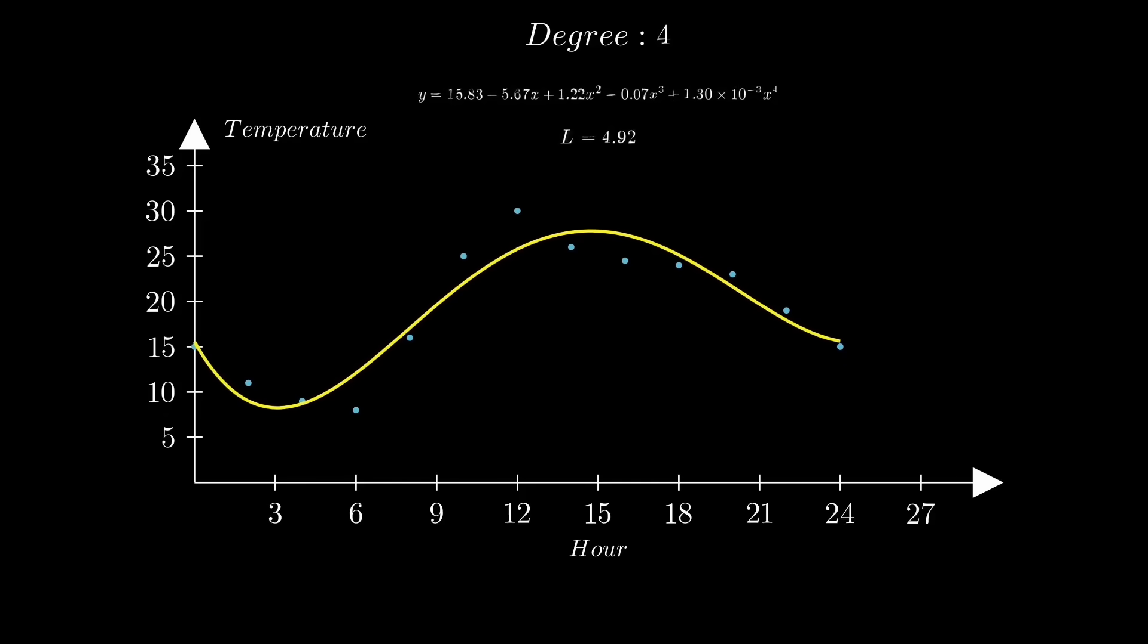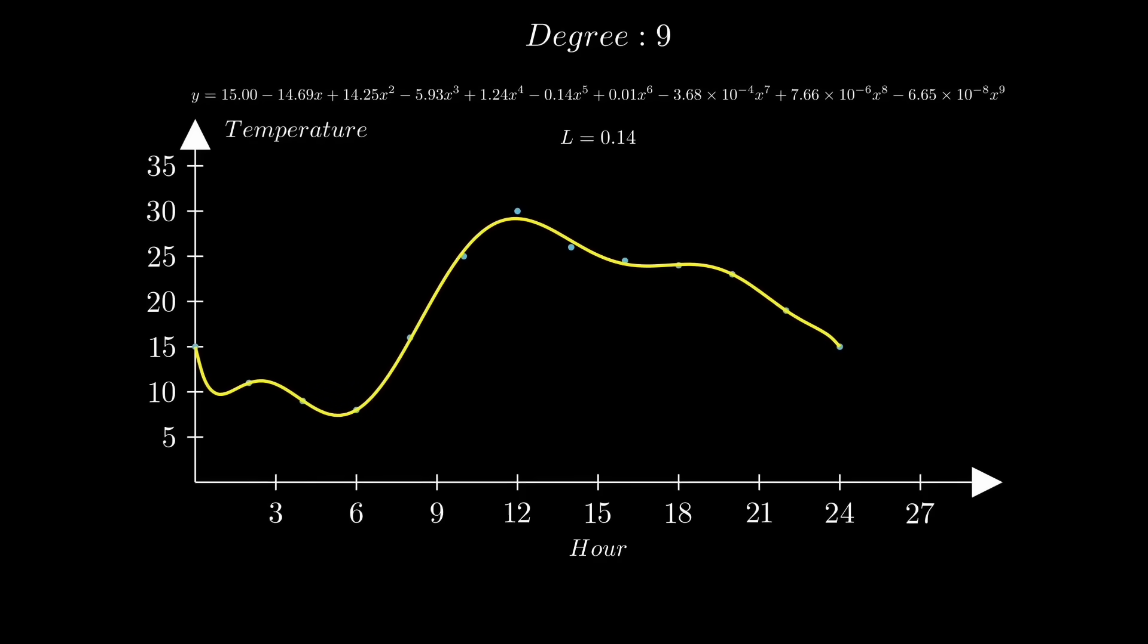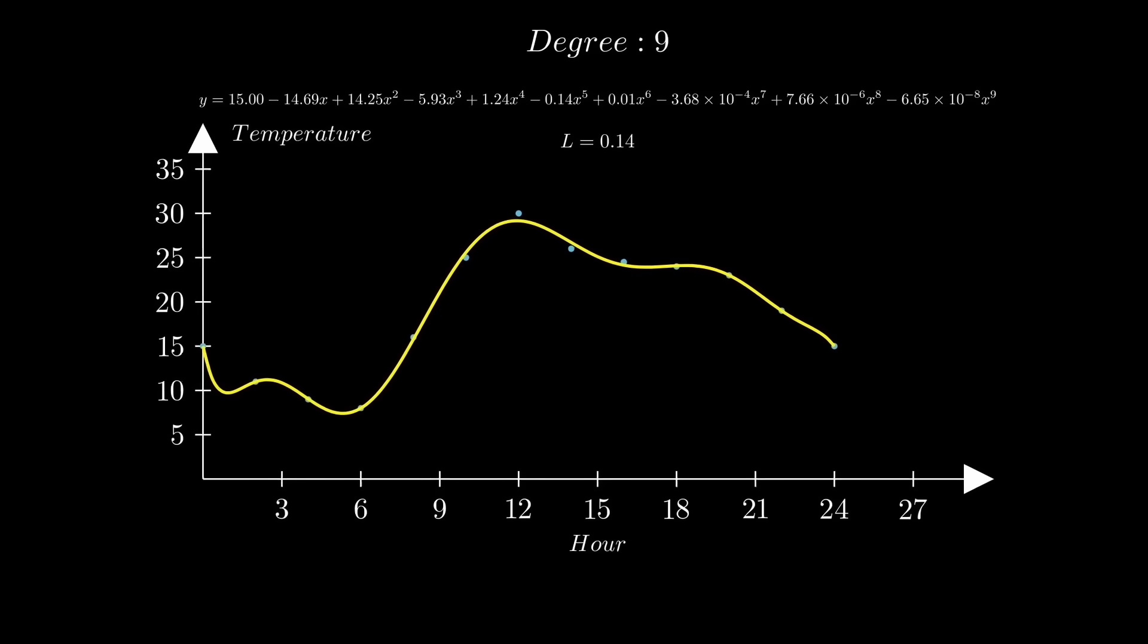As the polynomial's degree rises, our model becomes increasingly complex. You can observe that this curve aligns with the data points more effectively and the total deviation diminishes.